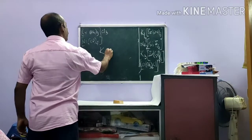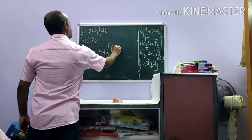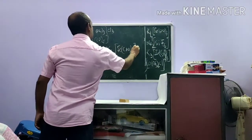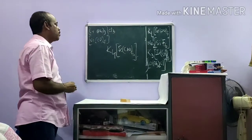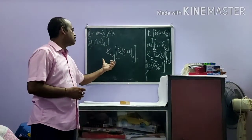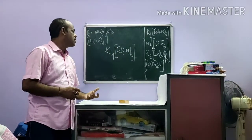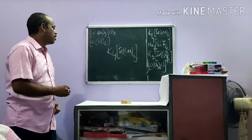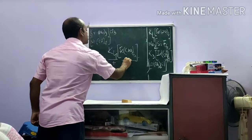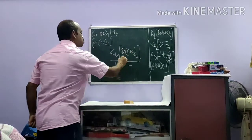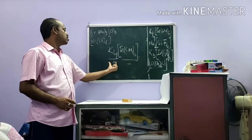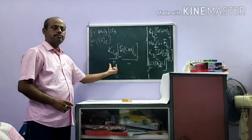Let us take one example: K4[Fe(CN)6]. The first rule is you have to identify which part of the complex is positive and which part is negative. Here the coordination sphere is the negative part and the ionization sphere is the positive part.